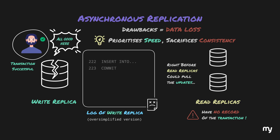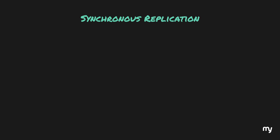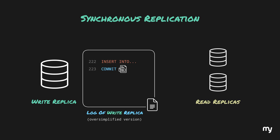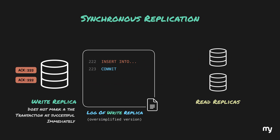The answer to this problem lies in synchronous replication. In synchronous replication, when a transaction and its commit statement are written to the log, the primary does not mark the transaction as completed immediately. Instead, it waits for the secondary replicas until they receive the latest log. Once the commit is received by the replicas and stored durably on the local disk, the replicas send an acknowledgement back to the primary. Only after the primary receives acknowledgements from all replicas does it signal the backend that the transaction was completed, and subsequently the user sees it as successful.